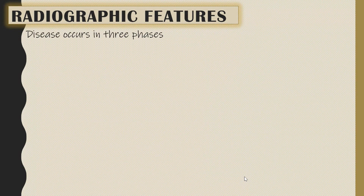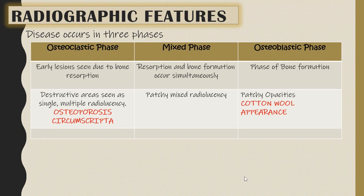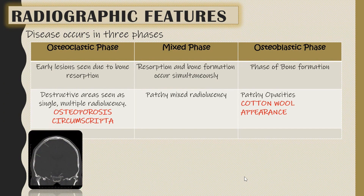The radiographic features of Paget's disease occur in three phases: the osteoclastic phase, the mixed phase, and the osteoblastic phase. In the osteoclastic phase, early lesions due to bone resorption show destructive areas with single and multiple radiolucencies. The isolated lesion in the skull, when large, is referred to as osteoporosis circumscripta. In the mixed phase, resorption and bone formation occur simultaneously, showing patchy mixed radiolucencies.